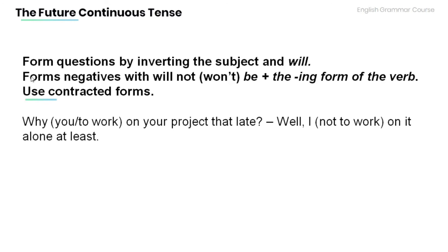Remember to form questions by inverting the subject and will, and to form negatives with will not or won't be plus the ing form of the verb. Use contracted forms. Now read the following sentences and provide the future continuous form of the words in the bracket.